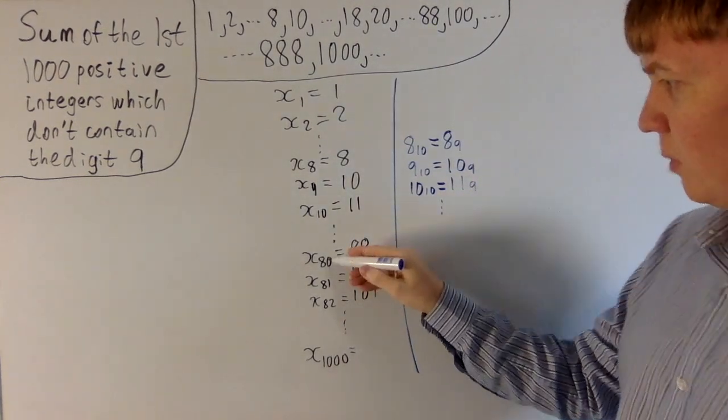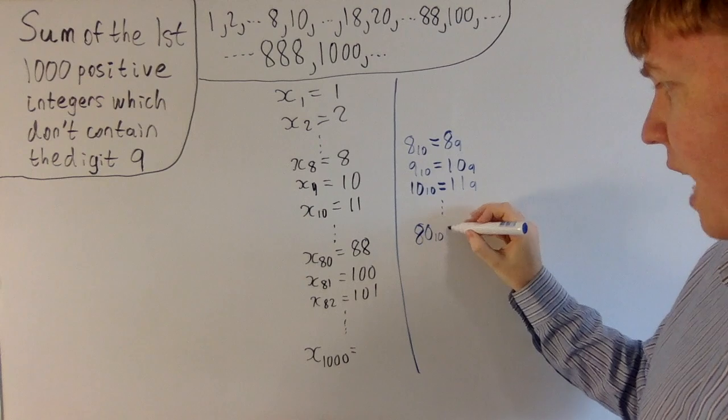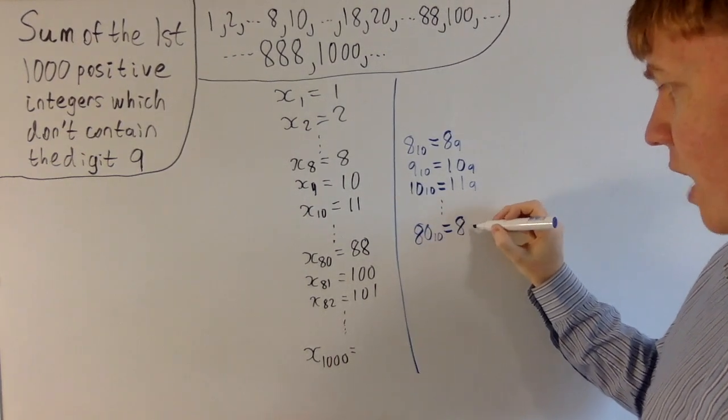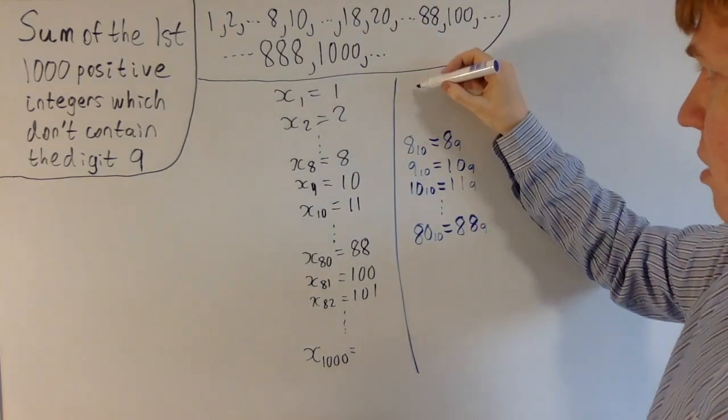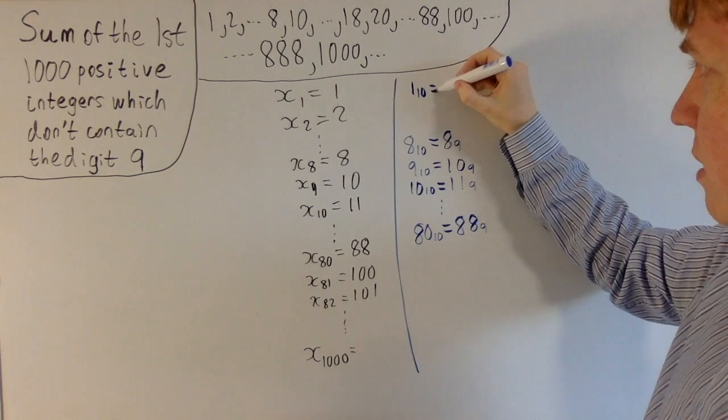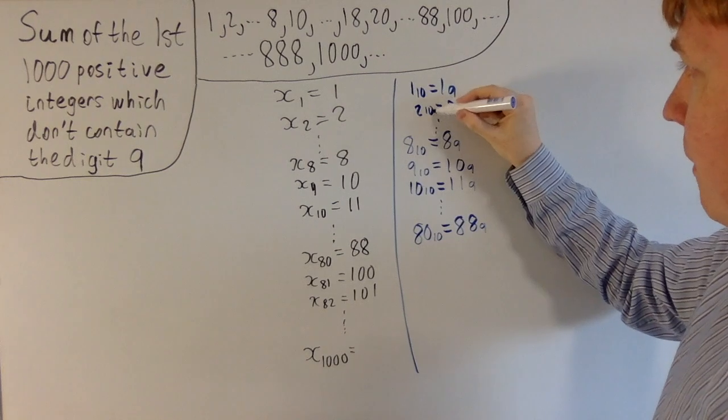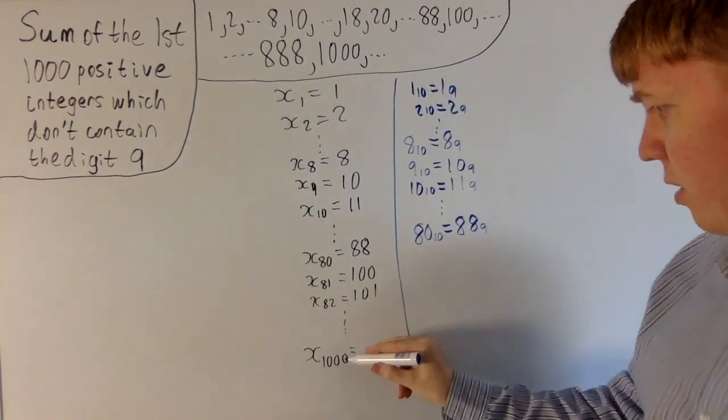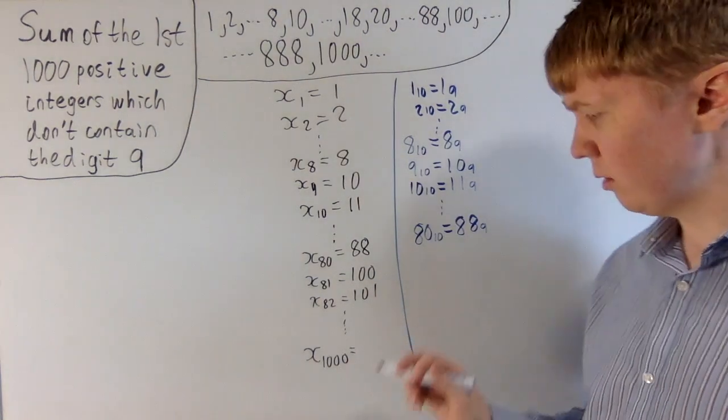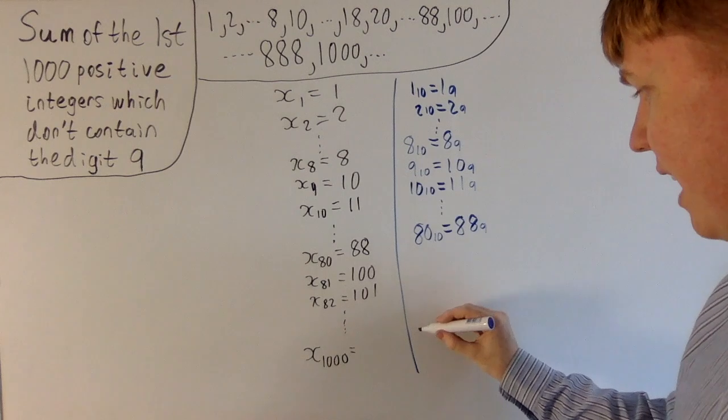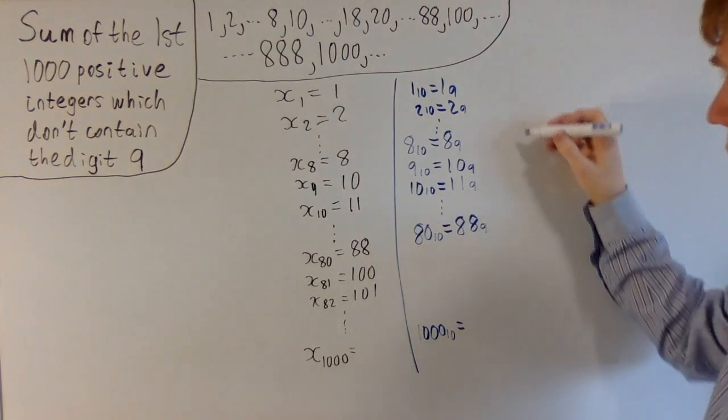And you can see that this works really well, even for our numbers later on in the sequence. So 80 in base 10, this is 8 lots of 9, plus 8 units, gives you 80 in base 9. You can see it's the same structure again here, 1 in base 10 is the same as 1 in base 9, 2 in base 10 is the same as 2 in base 9. So if we want to find out what is the 1,000th term in our sequence, we need to find what is 1,000 in base 9, when you convert it from base 10. So 1,000 in base 10, let's try and convert this into base 9.